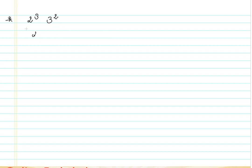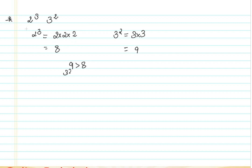The answer is straightforward if we expand them. 2 raised to the power of 3 is 2 multiplied by 2, three times, which gives me 8. And 3 raised to the power of 2 is 3 multiplied by 3, two times, which gives me 9. Since 9 is greater than 8, I can say 3 to the power of 2 is greater than 2 to the power of 3. This gives you a simple example of how to solve such tricky questions.